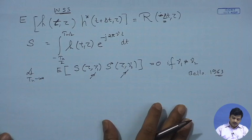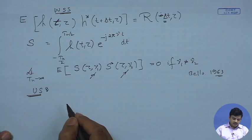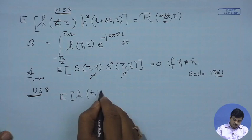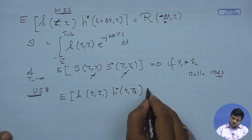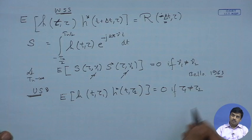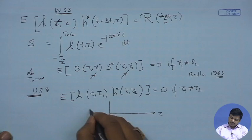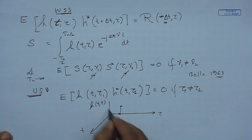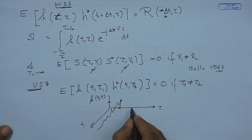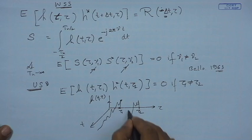Uncorrelated scattering states that E[h(t, tau_1) h(t, tau_2)] = 0 when tau_1 ≠ tau_2. In the delay-time diagram, echoes at different delays tau_1 and tau_2 fluctuate with time independently; at every instant their product averaged over time is zero — they are uncorrelated. This is the result of uncorrelated scattering: scatterers at different delays contribute independently to the received signal.